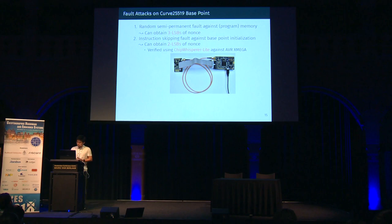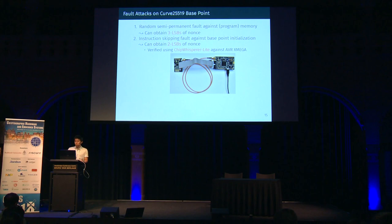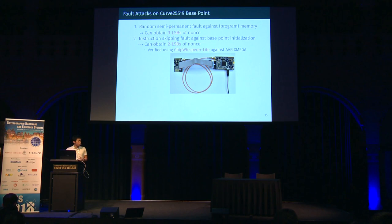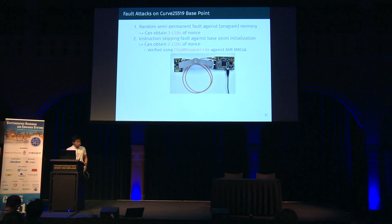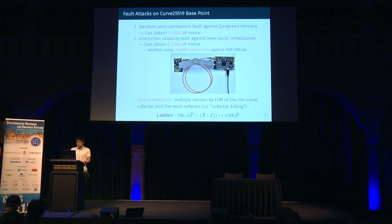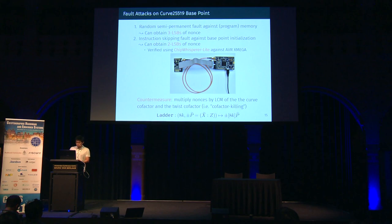We proposed two types of fault attacks on Curve25519. The first is a random same-permanent fault against program memory, which lets us obtain the three least significant bits of the nonce. The second is an instruction-skipping fault against the base point initialization, which reveals only two LSBs of the nonce but is much easier to achieve in practice. We verified this attack works against QDSA using a cheap oscilloscope against an AVR microcontroller. The countermeasure is simple: multiply the nonce by the least common multiple of the curve cofactor and twist cofactor — known as cofactor killing or clamping. For Curve25519, we multiply nonce k by 8, which completely thwarts our proposed fault attacks.